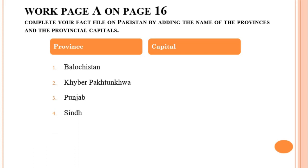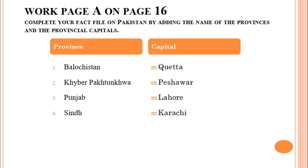Let's write the names of the provinces first: Balochistan, Khyber Pakhtunkhwa, Punjab, and Sindh. Now let's write the capitals of these provinces. The capital of Balochistan is Quetta. For Khyber Pakhtunkhwa we have Peshawar. The capital of Punjab is Lahore, and the capital city of Sindh is Karachi.